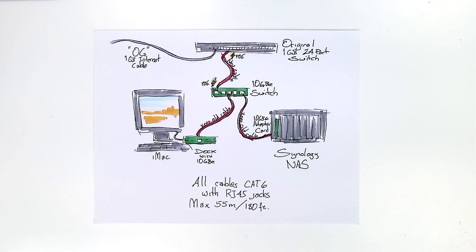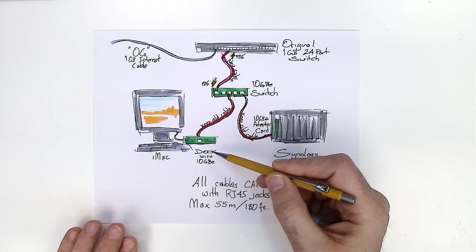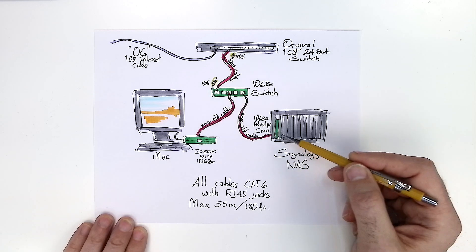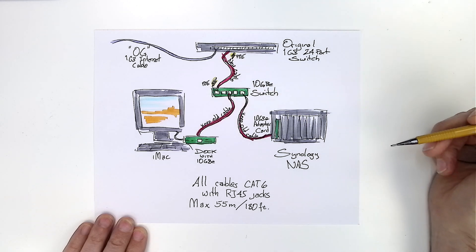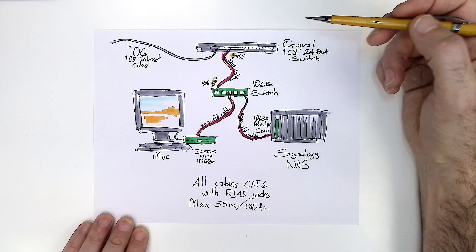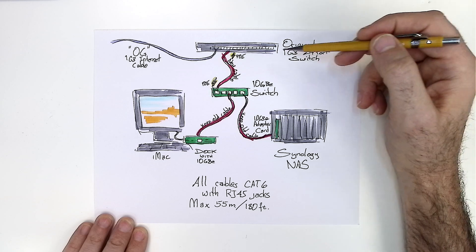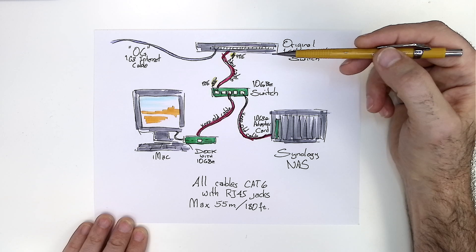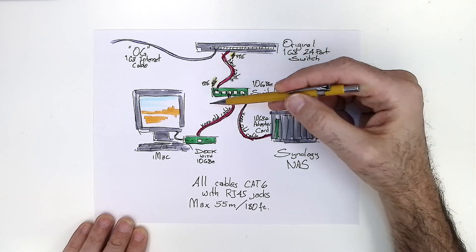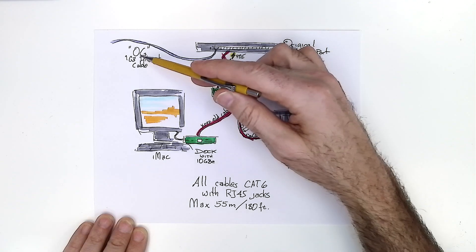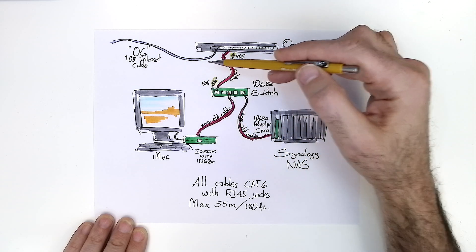Here's the setup. In order to perform 10 gigabit video editing, I needed to buy three things: a 10 gigabit adapter for the desktop machine, a 10 gigabit card for the Synology NAS, and a 10 gigabit switch as a go-between. Here we have the original switch for my home network — it's a 24 port switch with power over Ethernet, so it was really handy to use a 10 gigabit switch powered by PoE.